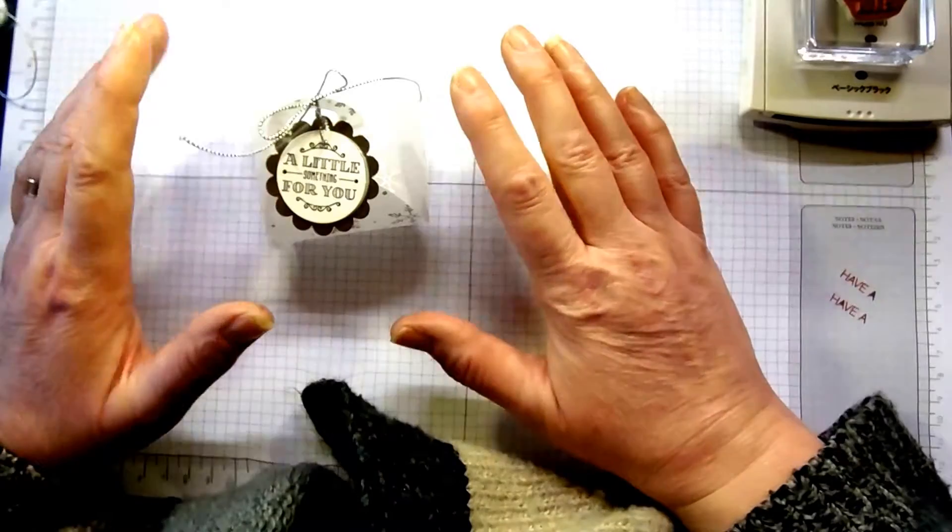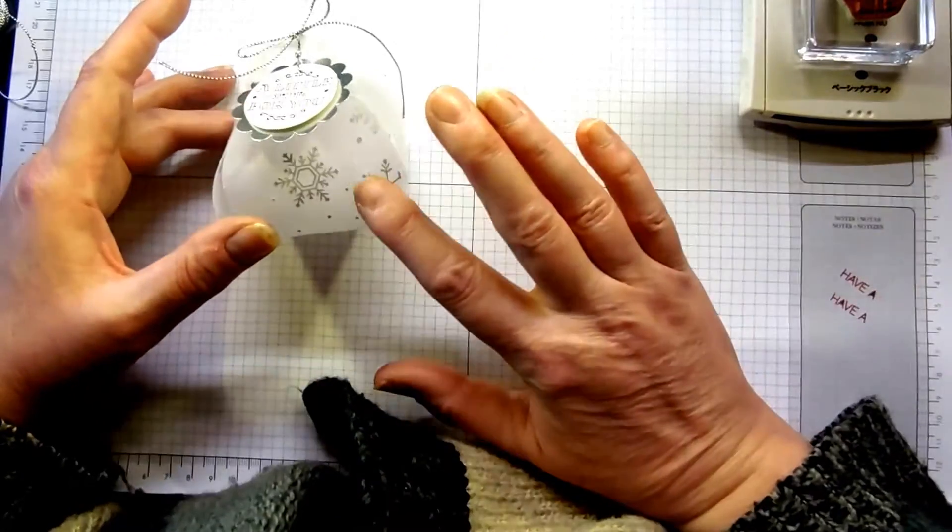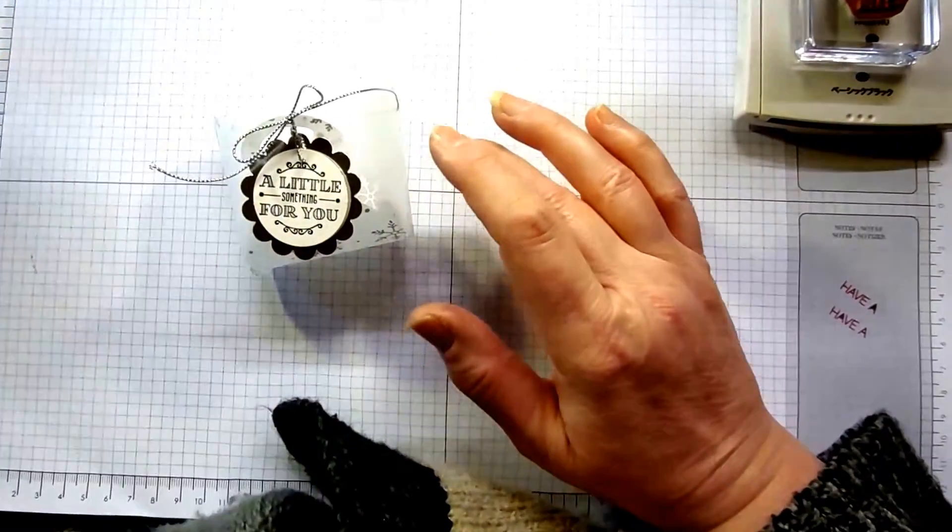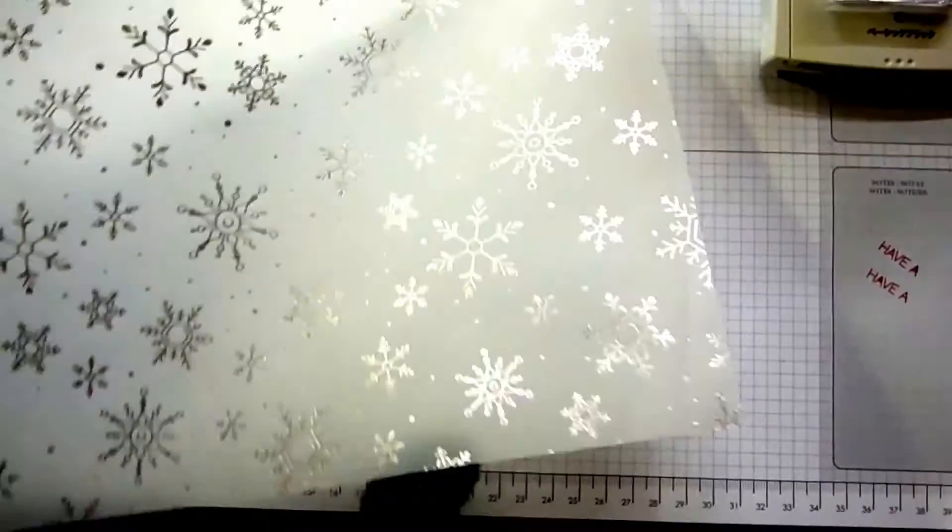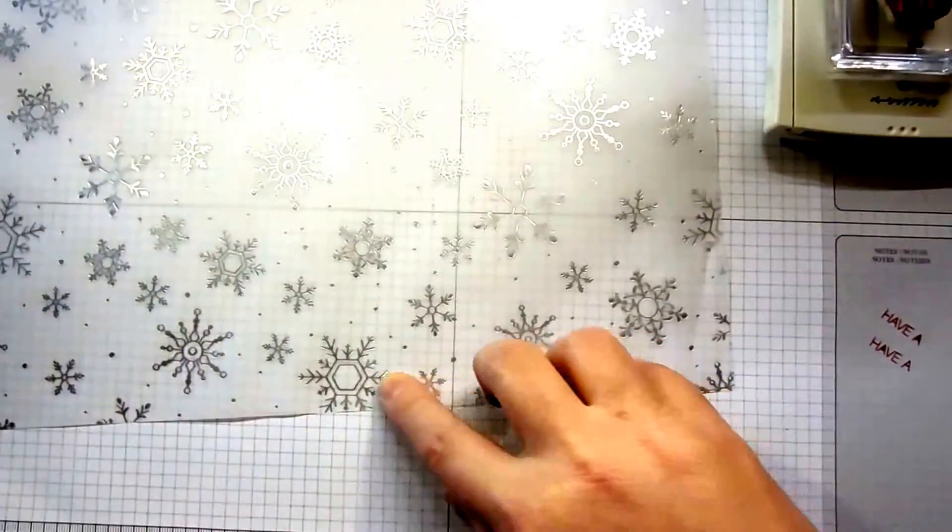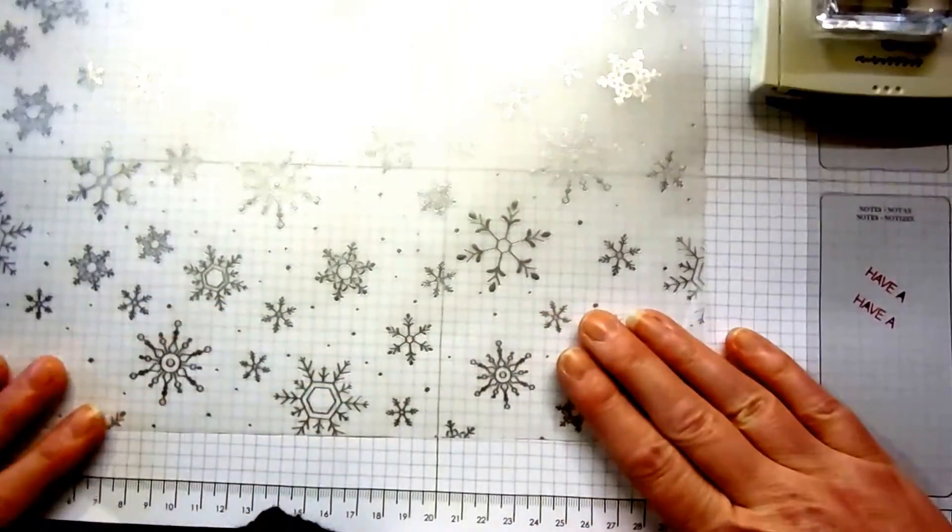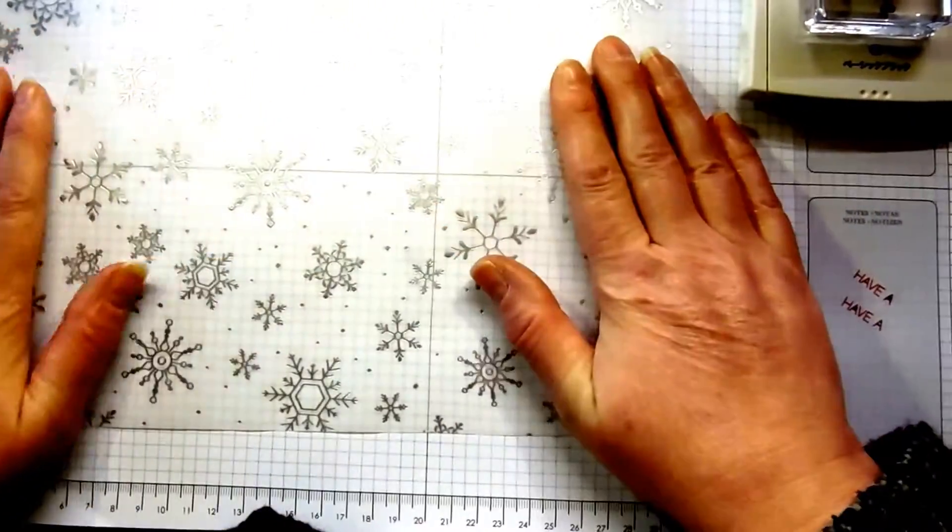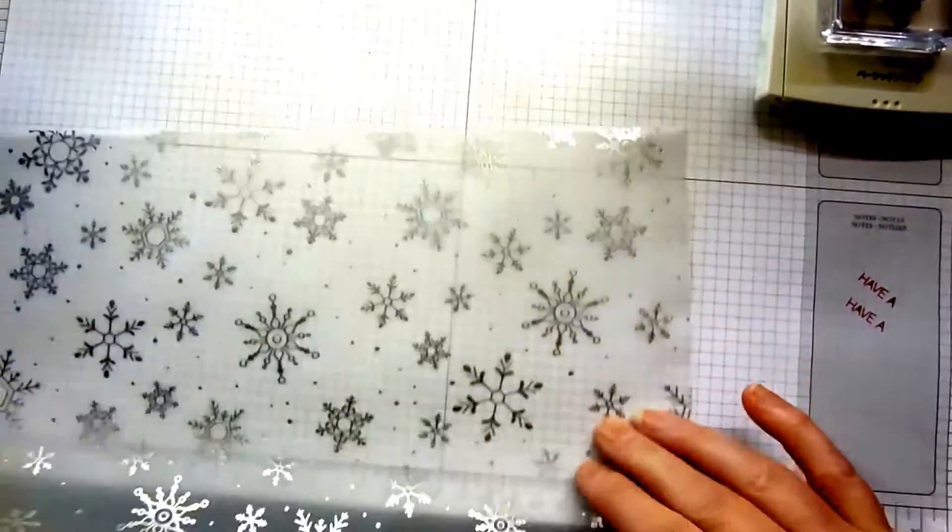I do do these bags where I heat emboss them myself, but this particular vellum - I'll show you here - it's just so beautiful. You've got this silver foiled on one side.